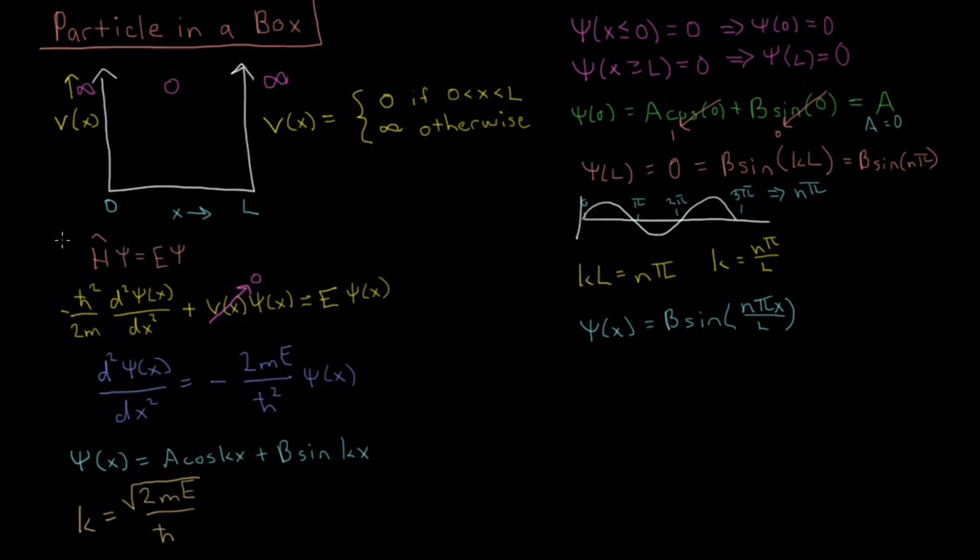So looking at the fact that we have K over here, which we know is n pi over L, we know that equals square root of 2M times E over H-bar, substituting in from here.